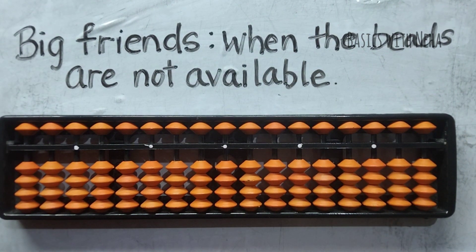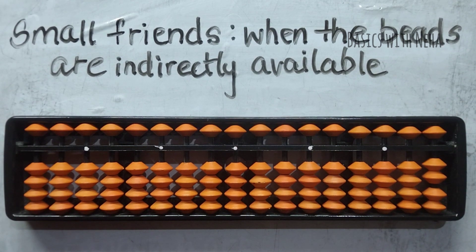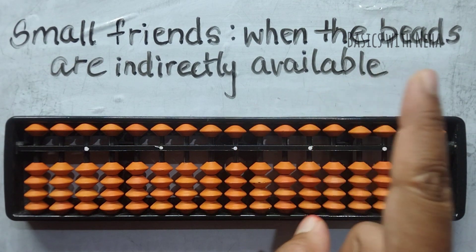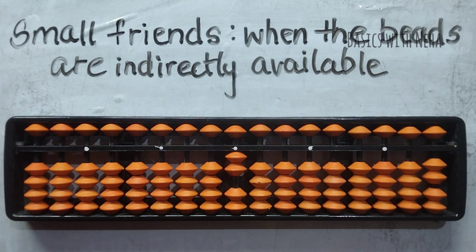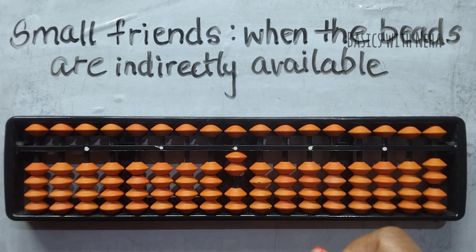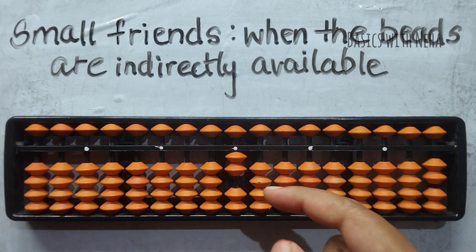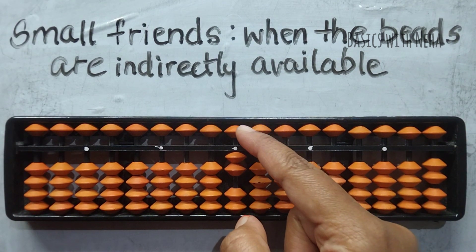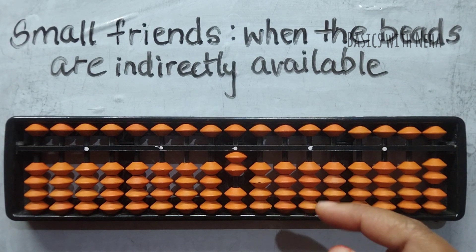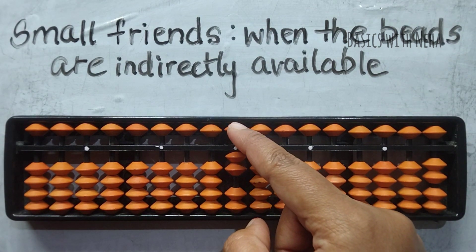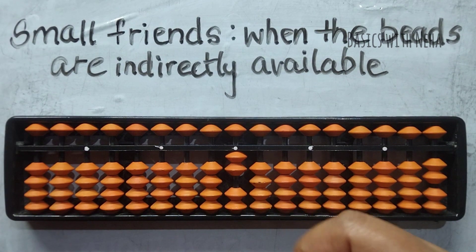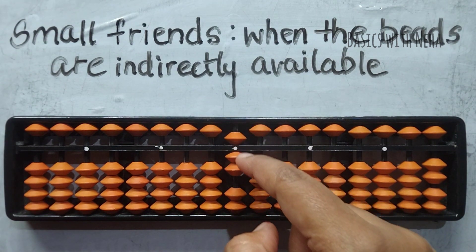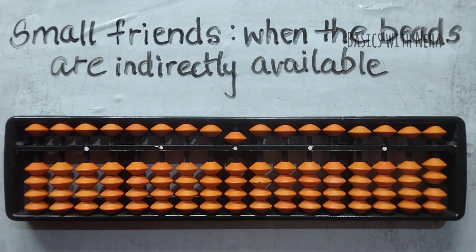Now let's see the small friends formula. Small friends formulas are used when the beads are indirectly available. For example, if I have two in my one's rod and I have to add three — I have enough beads, I have seven beads to add, but I don't have three beads directly available. So they are indirectly available. This is when I use the small friends formula. Small friends formula for plus three is plus five minus two, so my answer will be five.